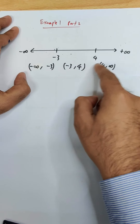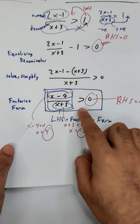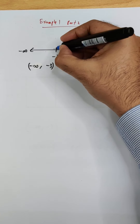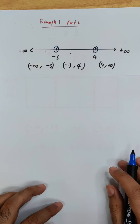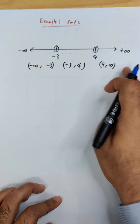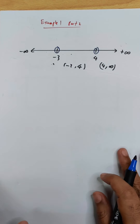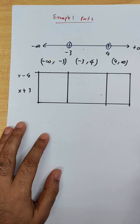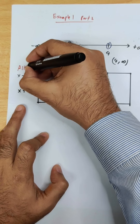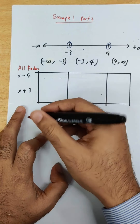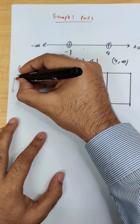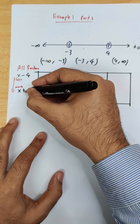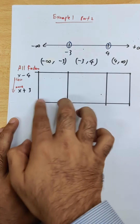This gives us three intervals: negative infinity to negative 3, negative 3 to 4, and 4 to infinity. Since our inequality has no equal sign, we use open brackets. Infinity always has an open bracket. Then we draw a table where the left side lists all the factors, with negatives at the top and positives below.